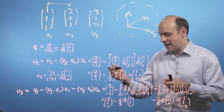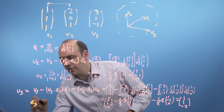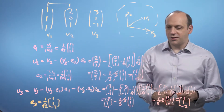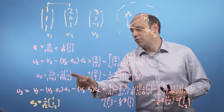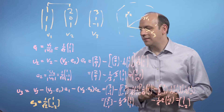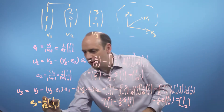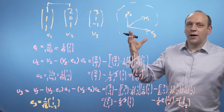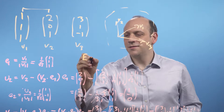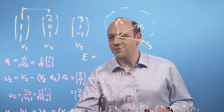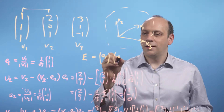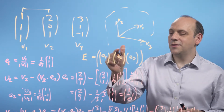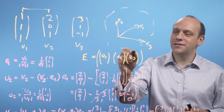I can then normalize u3 and get e3 = (1/√6)(1, 1, -2). Let's just check: (1,1,-2) is normal to (1,1,0) and normal to (1,1,1), and those two are normal to each other. They are all of unit length. So I can write down my new transformation matrix E, described by the basis vectors e1, e2, e3 written as column vectors. That's my transformation matrix that first contains the plane and then contains the normal to the plane.